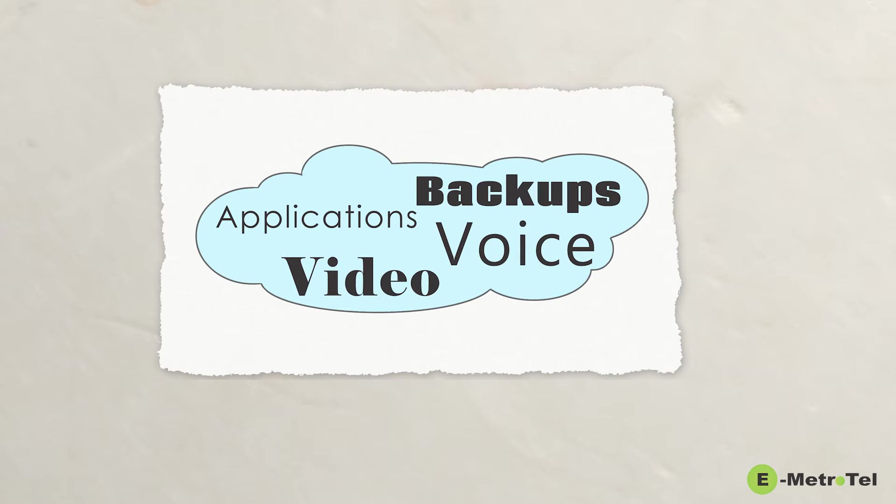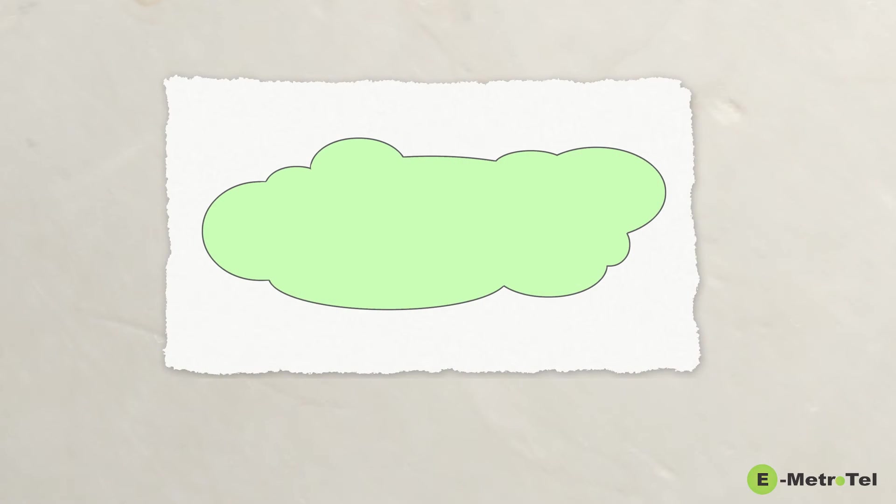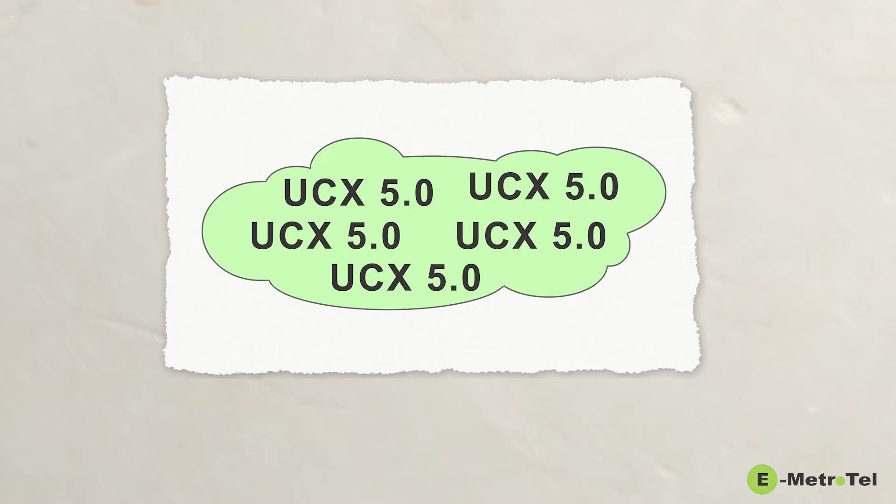But what if you could create your own part of the cloud? With eMetroTel's UCX version 5.0, you can create virtually limitless unified communications instances in a cloud that you create. And every instance is a fully-featured professional solution loaded with everything.